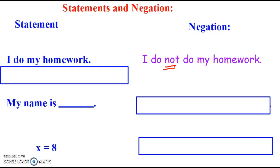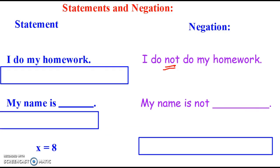Now take the next sentence 'my name is...' and write your first name in there. Pause the video and write the negation of that statement. You should have written 'my name is not...' whatever your name was. Whether it's Jocelyn, Izzy, or Cassidy — it just should be your name.